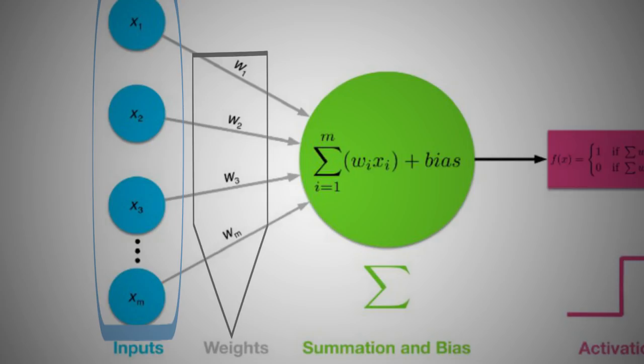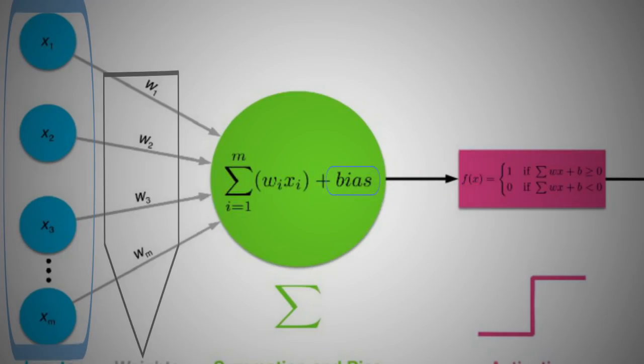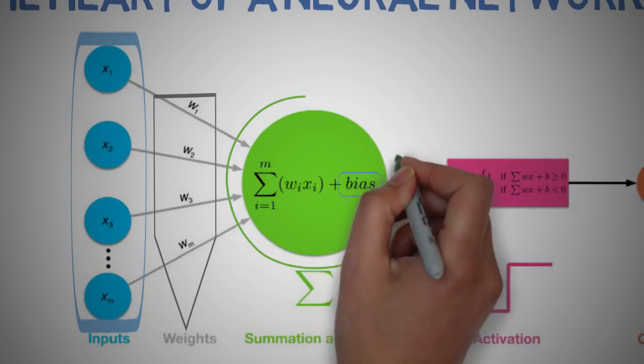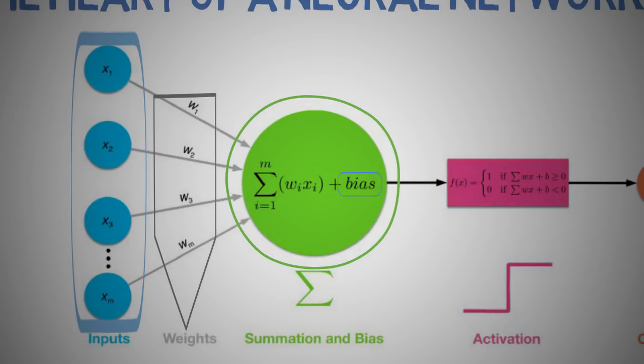Each perceptron also has a bias which can be thought of as how flexible the perceptron is. It is somehow similar to the constant b of a linear function y equals ax plus b. It allows us to move the line up and down to fit the prediction of the data better. Without b, the line will always go through the origin and you may get a poorer fit. So these weights are summed over here with the inputs.